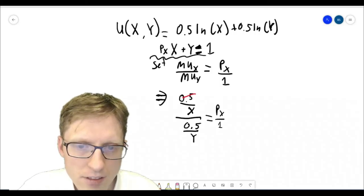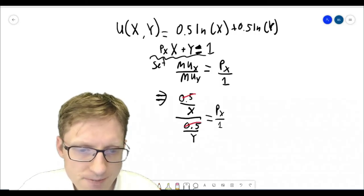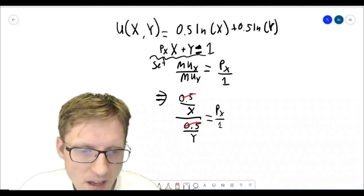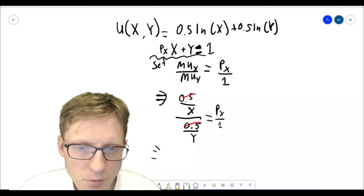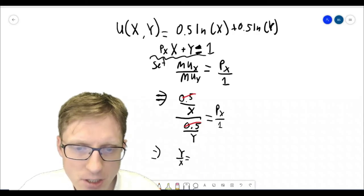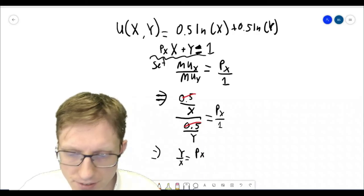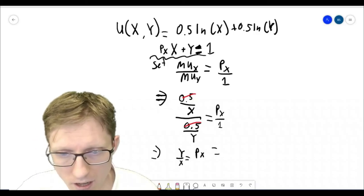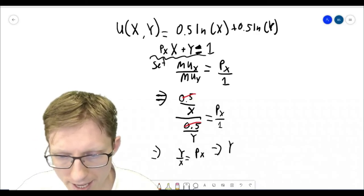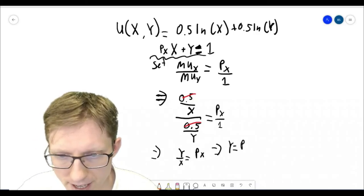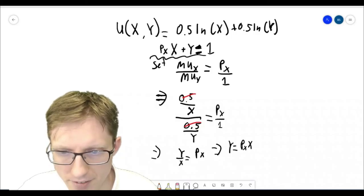So these 0.5 cancel, leaving us with y over x is equal to the price of x. Or y is equal to the price of x times the quantity of x.